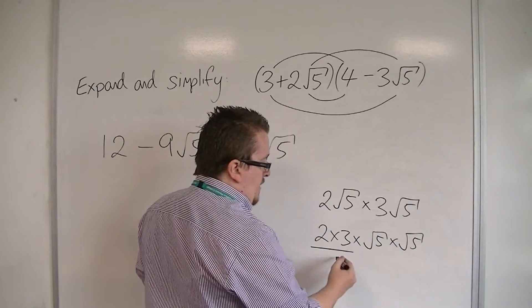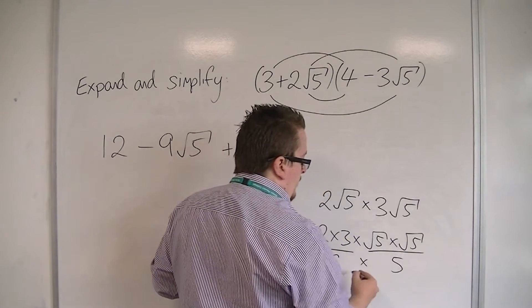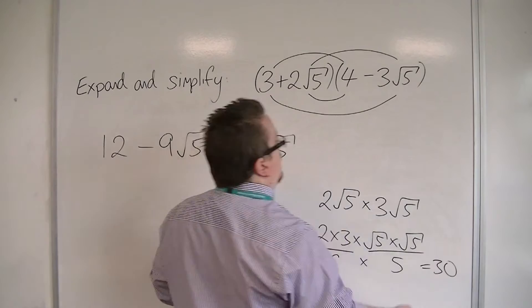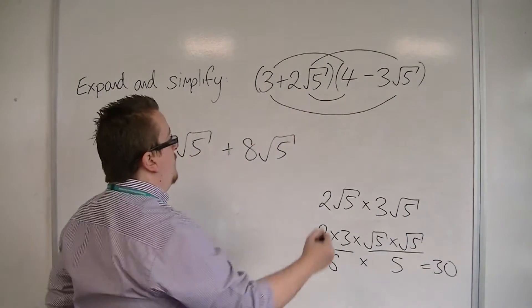We know that 2 times 3 is 6, and we know that root 5 times root 5 is 5. So 6 times 5 would be 30. So 2 root 5 times minus 3 root 5 is minus 30.